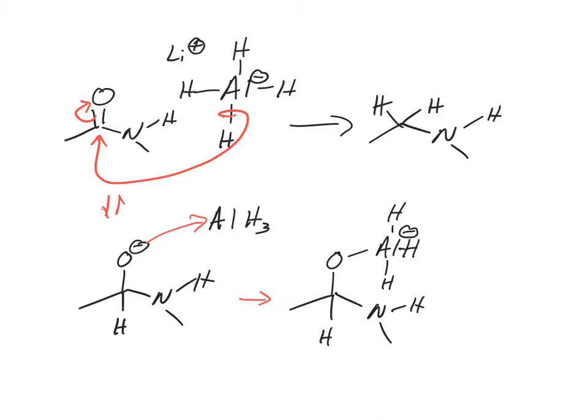At this point, you can do a couple different things. One of the options could be that now this became kind of a better leaving group. Aluminum oxide, oxygen-bonded aluminum becomes a better leaving group. We can bring these electrons down and kick this out.